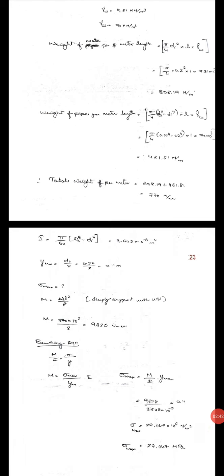So I is π/64 × (d_o⁴ - d_i⁴). Simplifying this in terms of d_o and d_i we get 3.645 × 10⁻⁵ meter⁴.